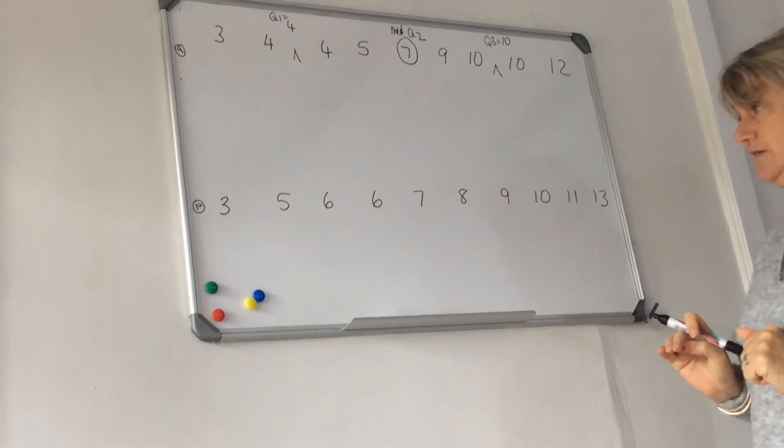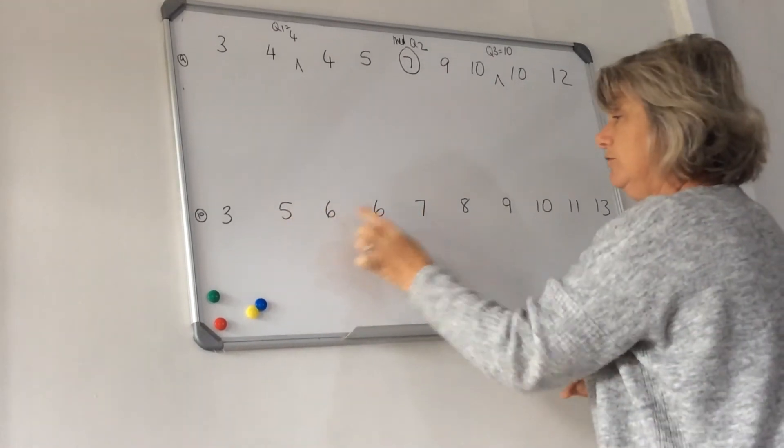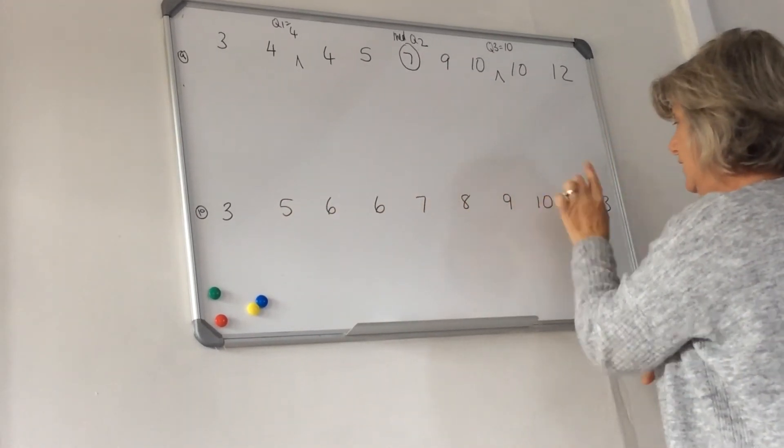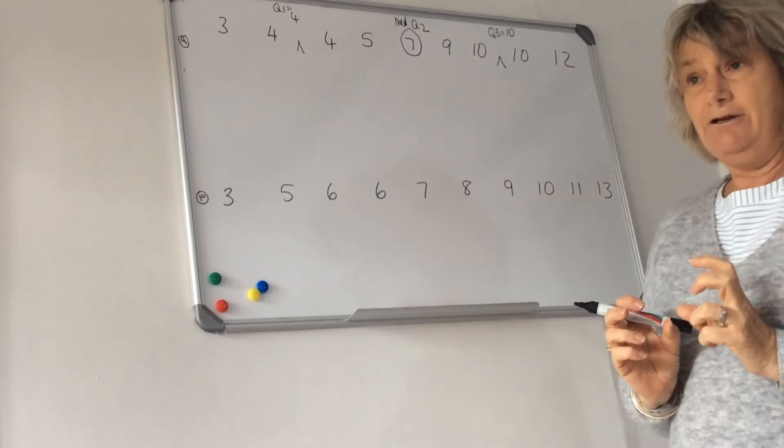Let's have a look at ten values in the data set. One, two, three, four, five, six, seven, eight, nine, ten. So it's an even number of values.